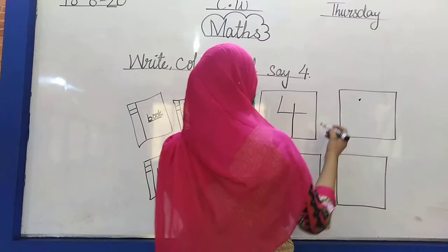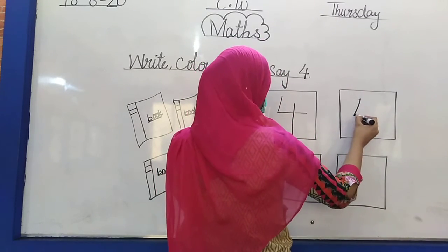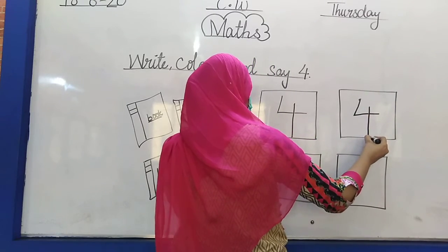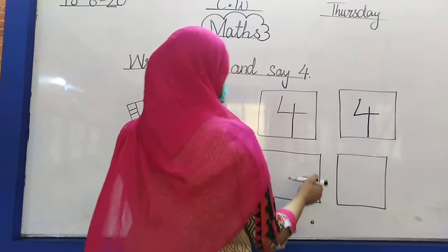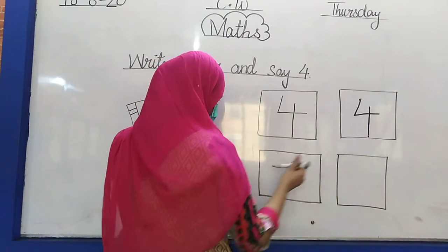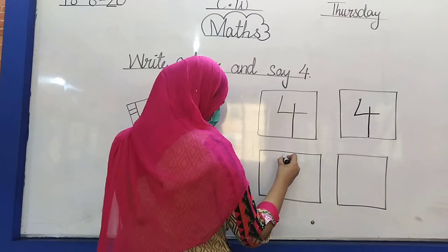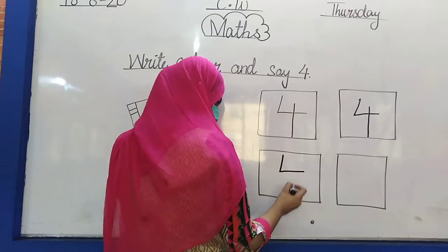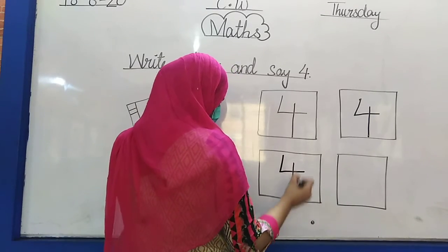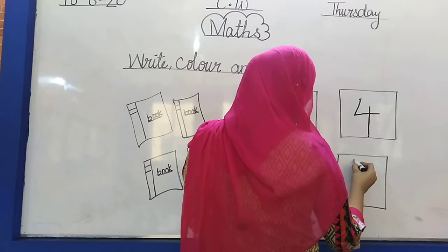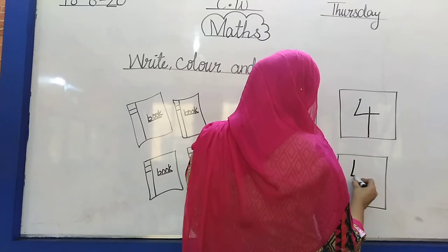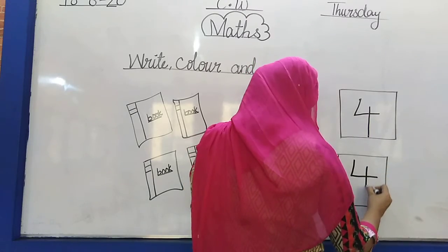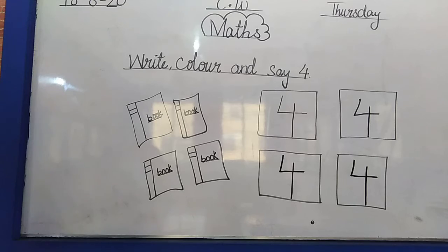Everyone look at the board. Make a standing line. Then make a sleeping line. Then again make a standing line. This is called number 4. Again look at the board carefully. Make a standing line. Then make a sleeping line. Then again make a standing line. Make a standing line, then make a sleeping line, then make a standing line. It's called 4.